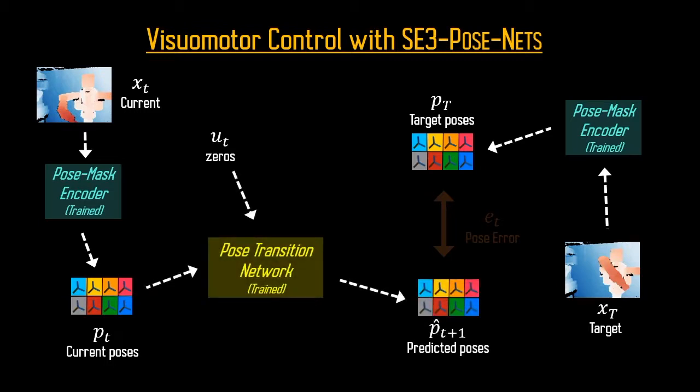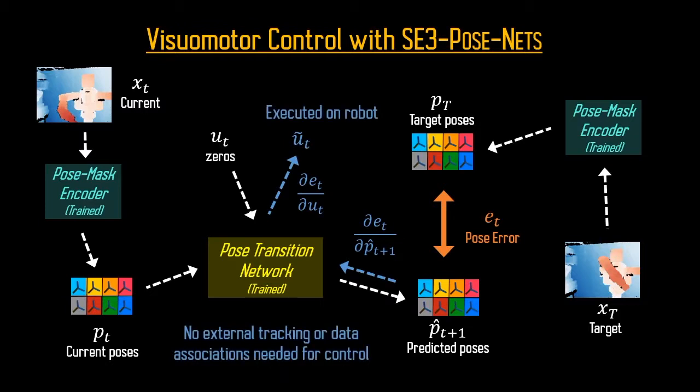We then measure error between these predictions and the target poses and back-propagate the gradients through our trained networks to generate updated controls. We execute these controls and repeat until convergence.